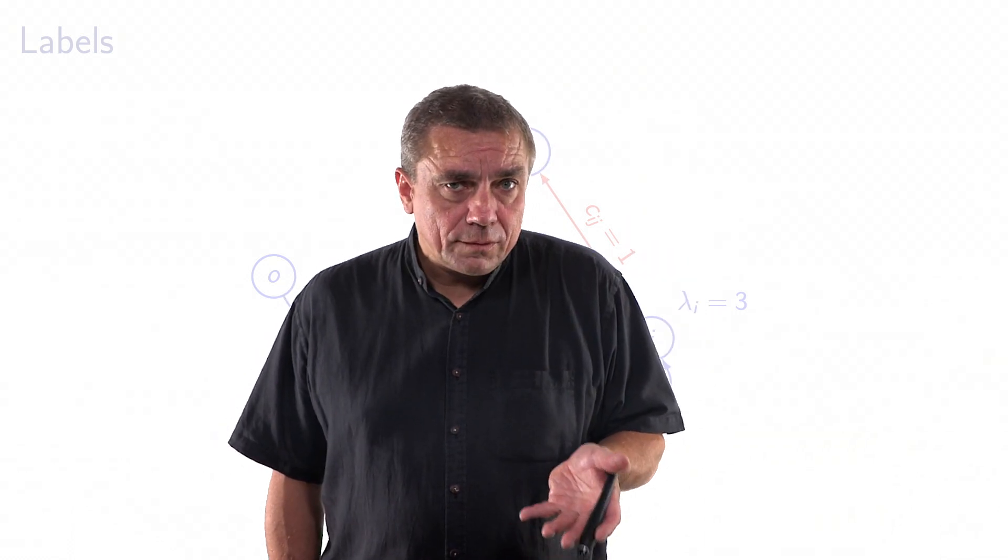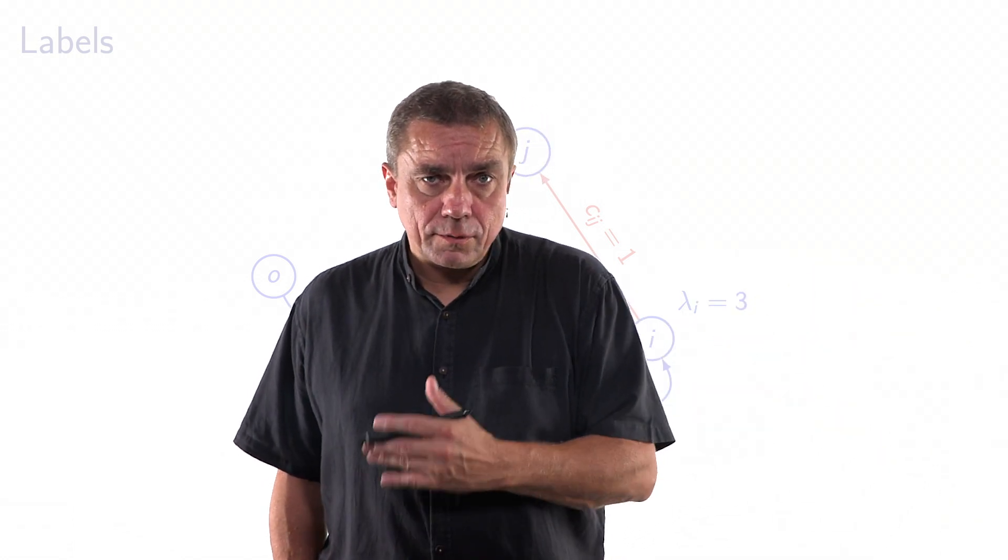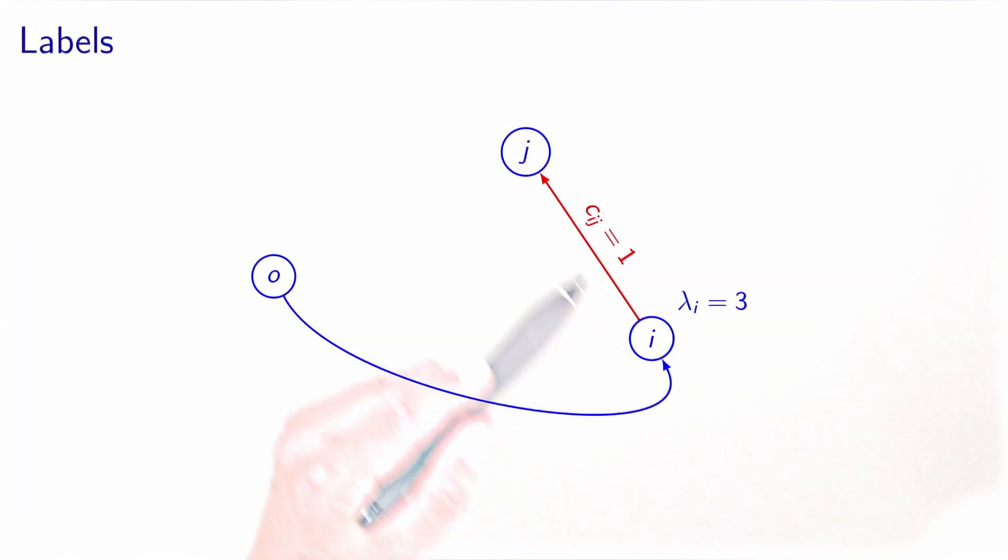identified a path with length 3. So, a path from the origin o to node i with length 3. Now, if we follow the arc ij, we find a longer path from o to j of length 4, which is 3 plus 1.